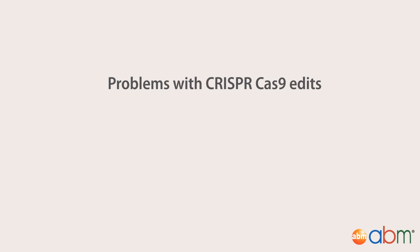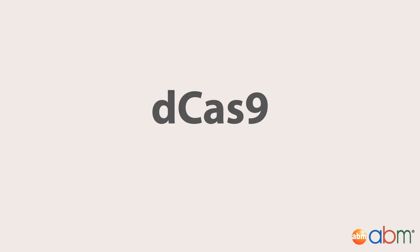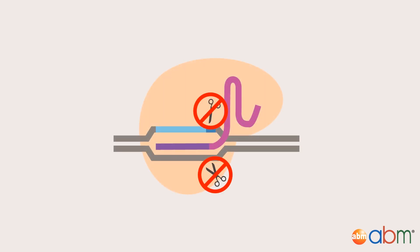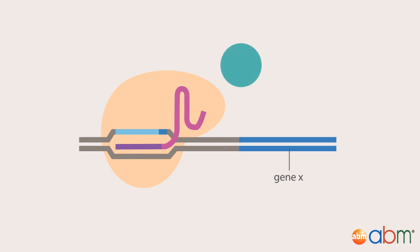But the edits made by CRISPR-Cas9 are permanent, which is not ideal for many applications and can be toxic to cells. This led to the development of a catalytically dead Cas9 called dCas9 — a mutant in which both cleavage domains of Cas9 are inactivated. By itself, dCas9 can still target and bind DNA with high precision.